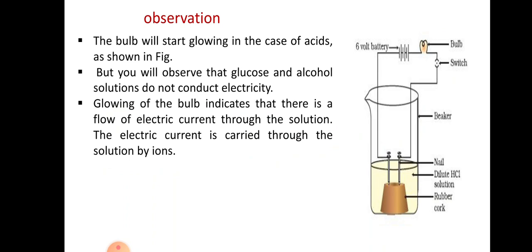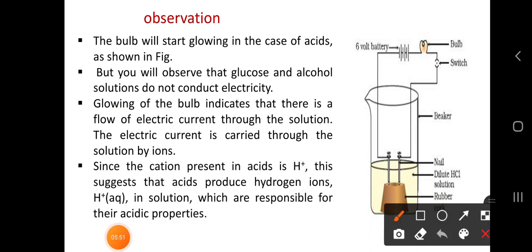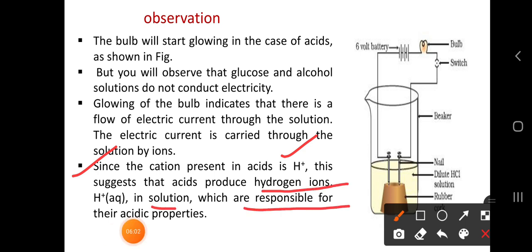The ions responsible are cations and anions. The cation present in acid is H⁺, and this suggests that acid produces hydrogen ions in aqueous solutions, which are responsible for their acidic property. So in acid, the flow of current is in the form of H⁺ cations.